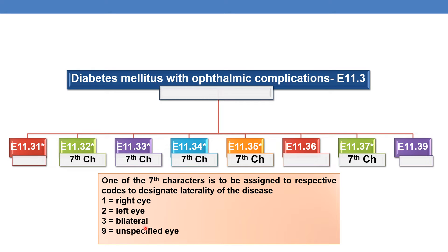For example, if a condition is bilateral, you need not quote 1 and 2 separately. Simply by giving 7th character 3, it indicates bilateral wherever applicable.